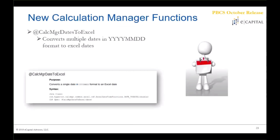The Calculation Manager functions library has received a new function: @CALCMGRDATESTOEXCEL. This converts a single date in YYYYMMDD format to an Excel date, so when a date field is accessed through Excel or Smart View, it comes in in a way that Excel understands rather than requiring additional formatting by the user. Googling @CALCMGRDATESTOEXCEL will provide full Oracle documentation on the command, which is what the screenshot shown is also from.